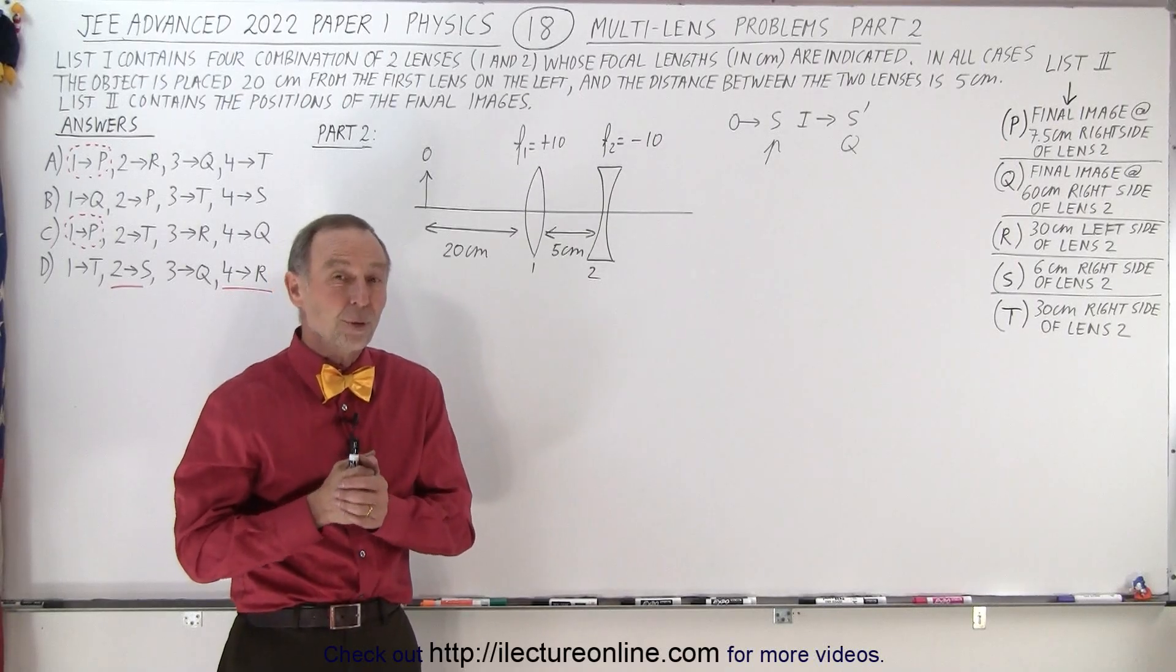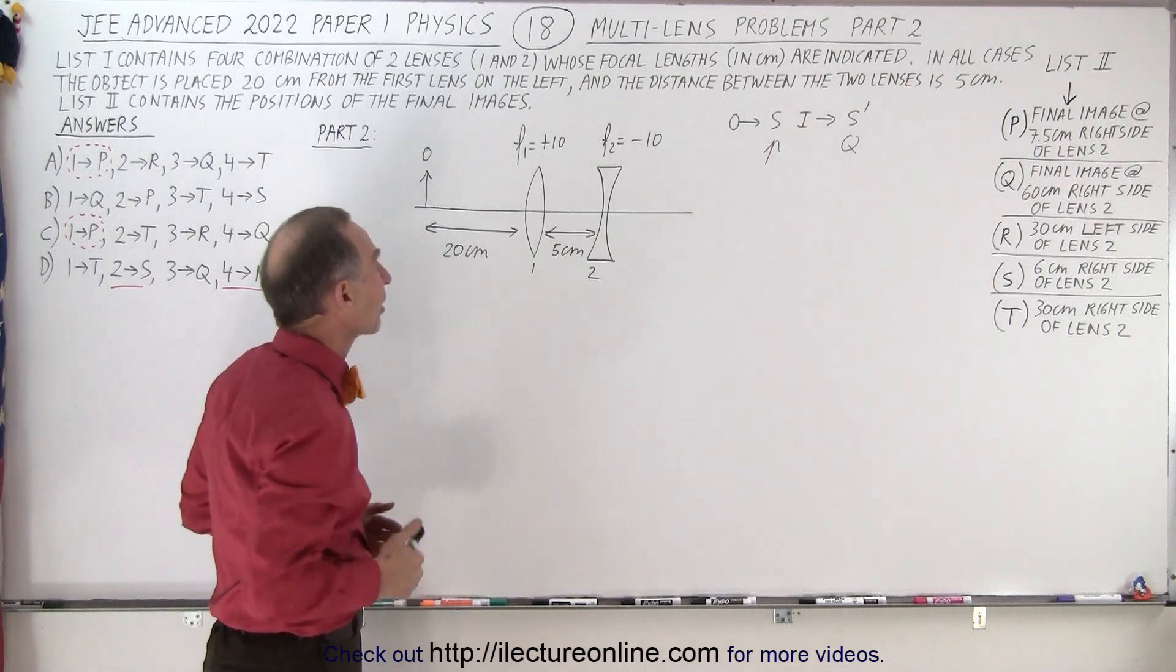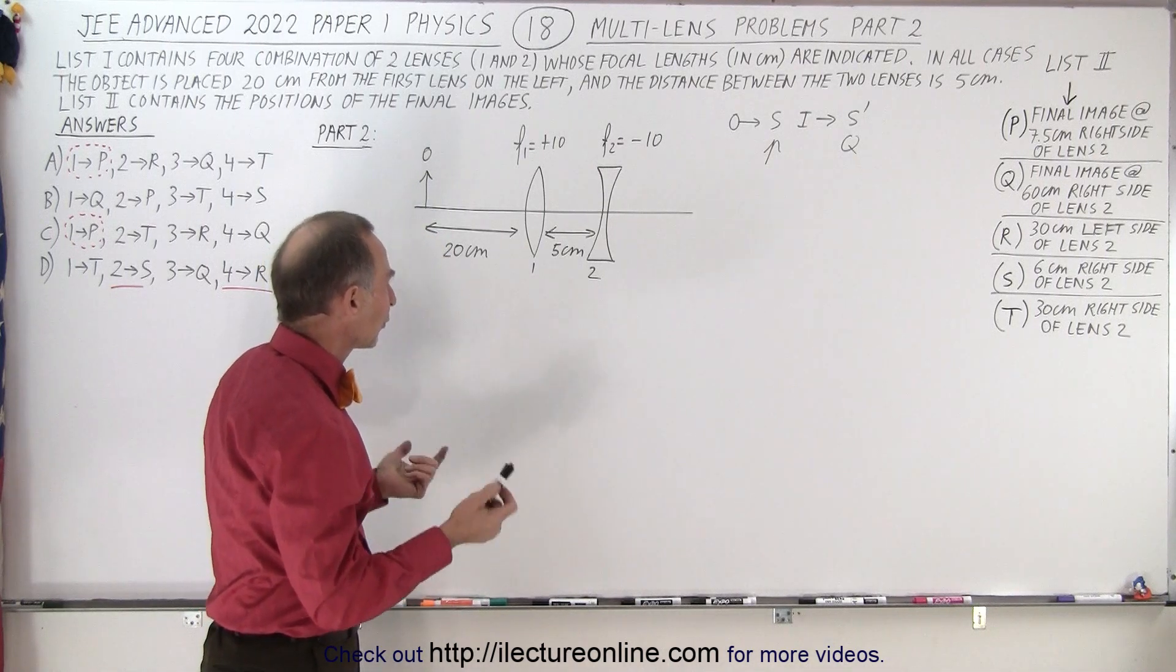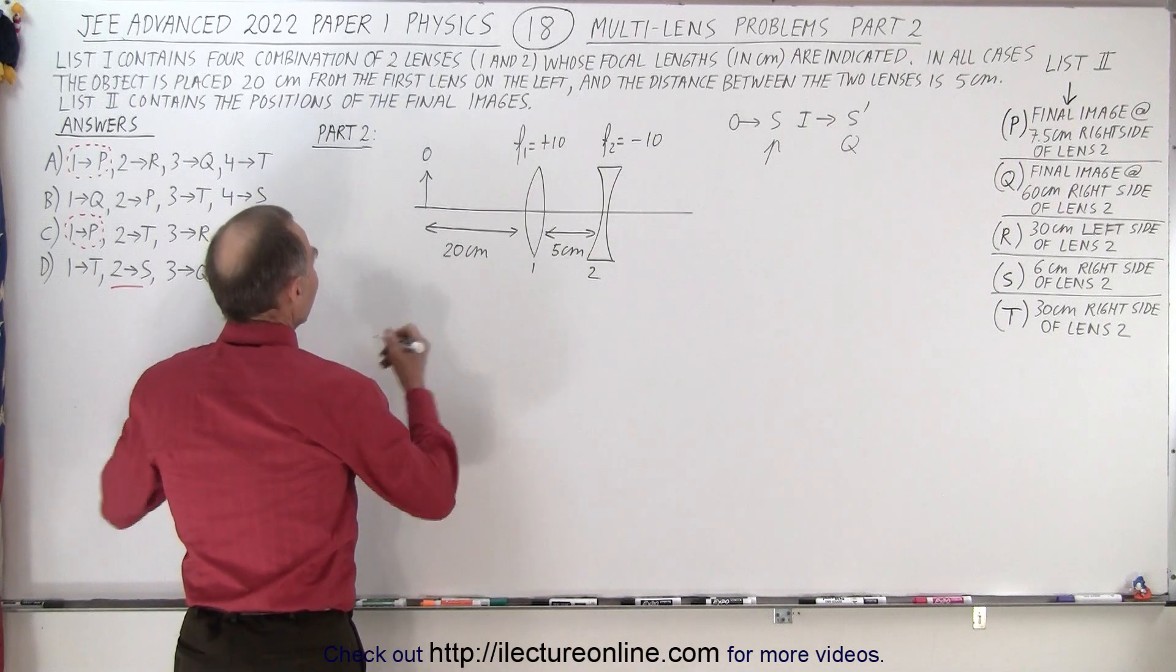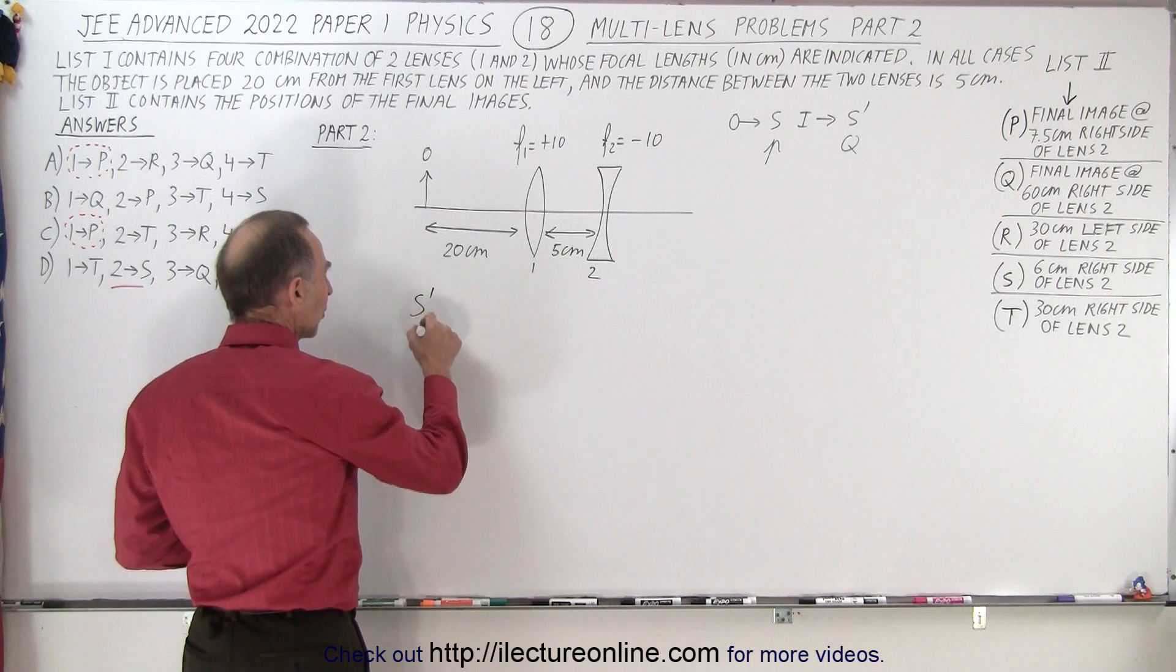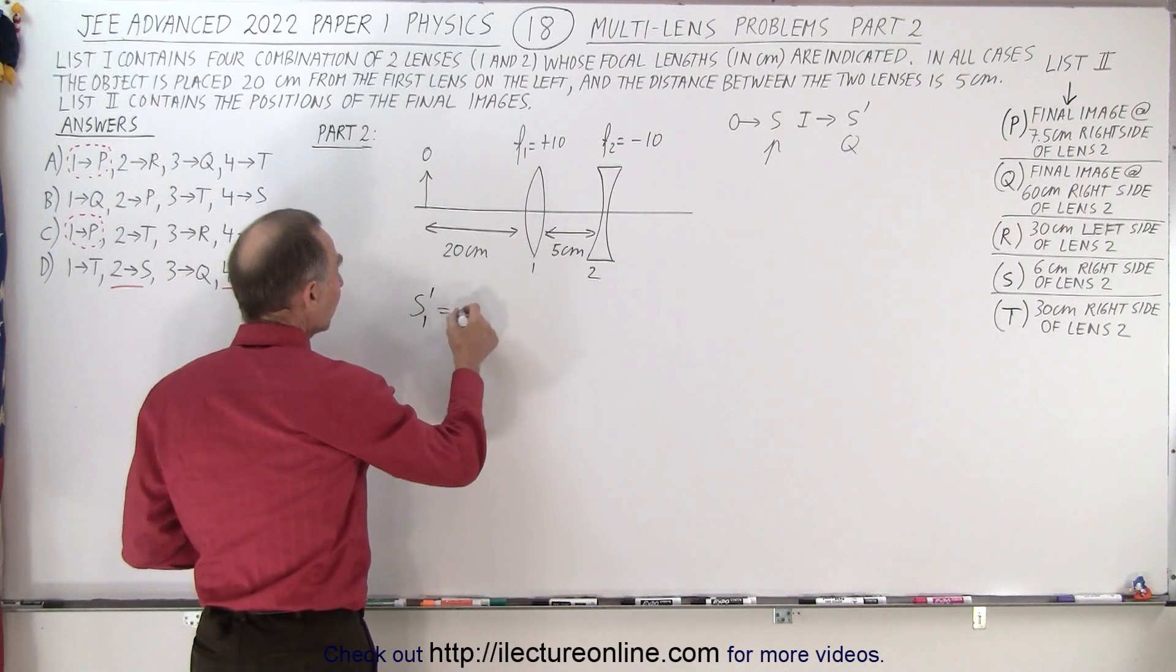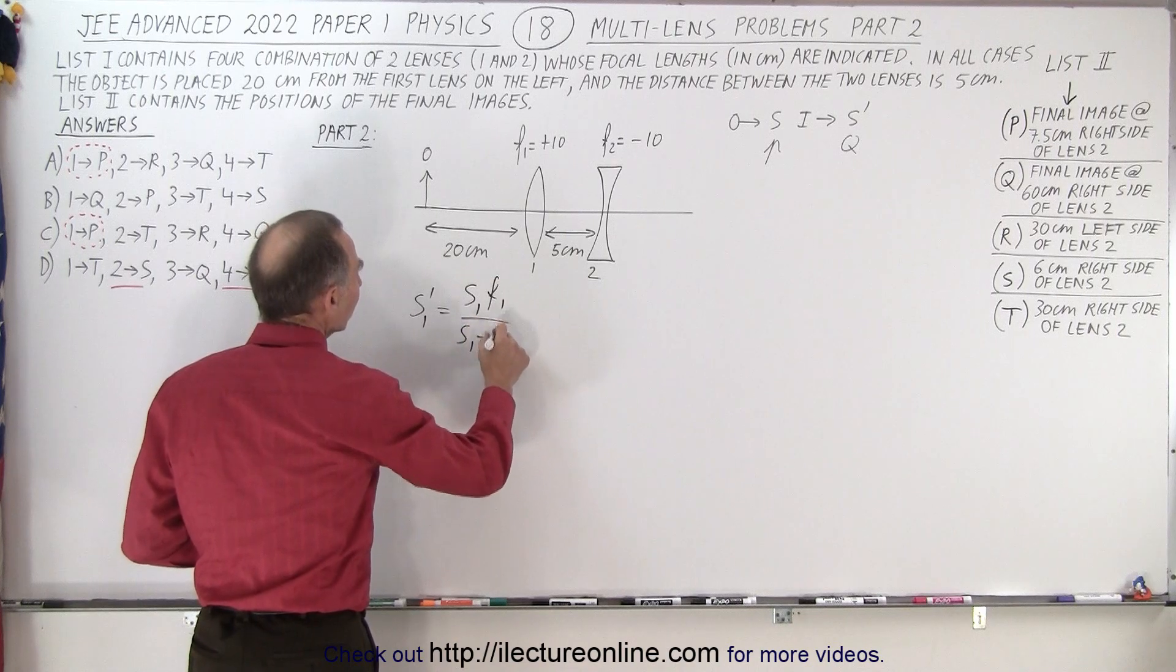Welcome to ElectronLine. So here's the second part of problem number 18. We get a different lens combination and of course what I wrote down the last time, which is what we're going to write this time, is that S prime, the position of the first image, so we'll write S1 prime is equal to S1 F1 over S1 minus F1.